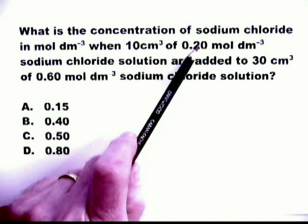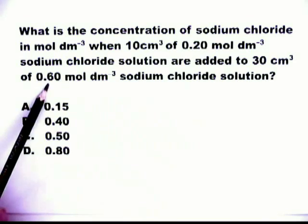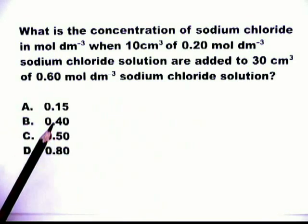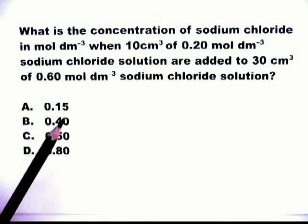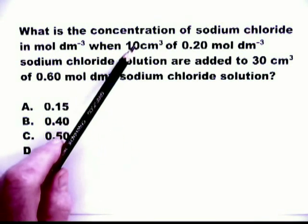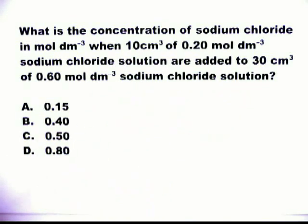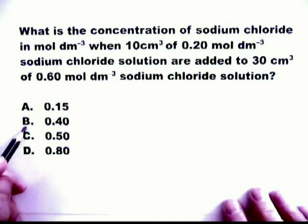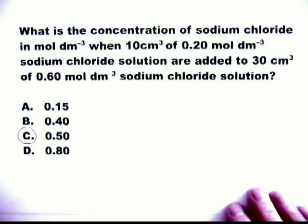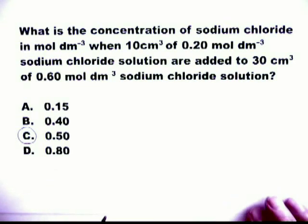Look at B. This is an interesting one. 0.4 is halfway between 0.2 and 0.6. For you to achieve a figure of concentration of 0.4, you would have to mix equal volumes of the two solutions. And equal volumes were not mixed. Therefore, B is not a possible answer. This leaves only C, 0.5.